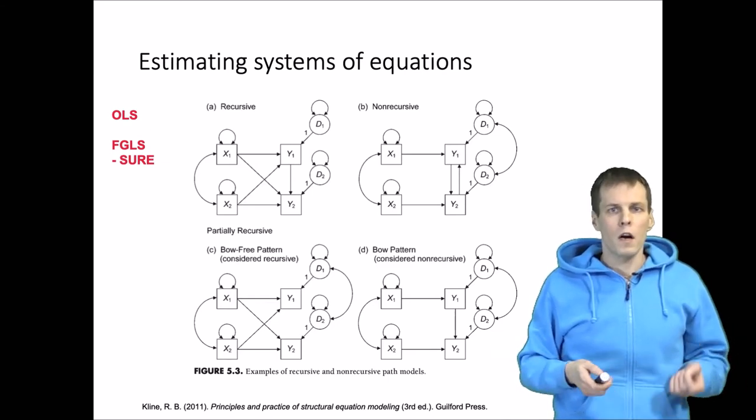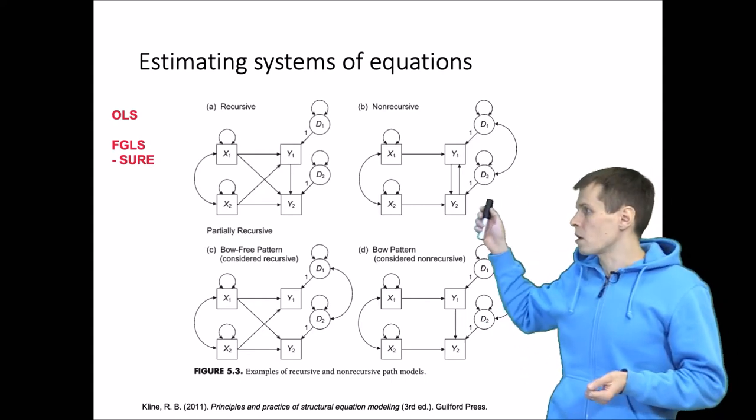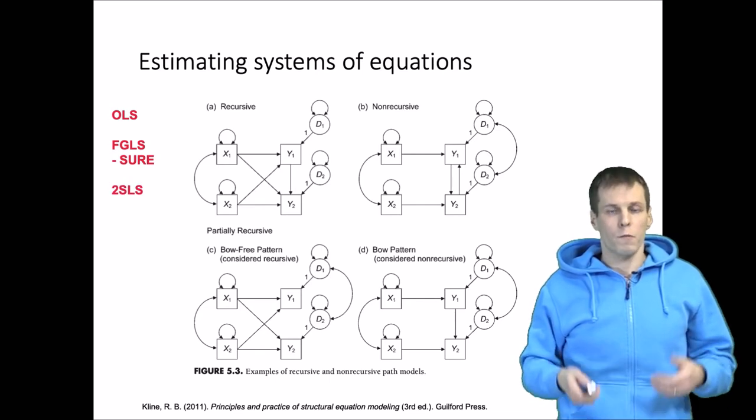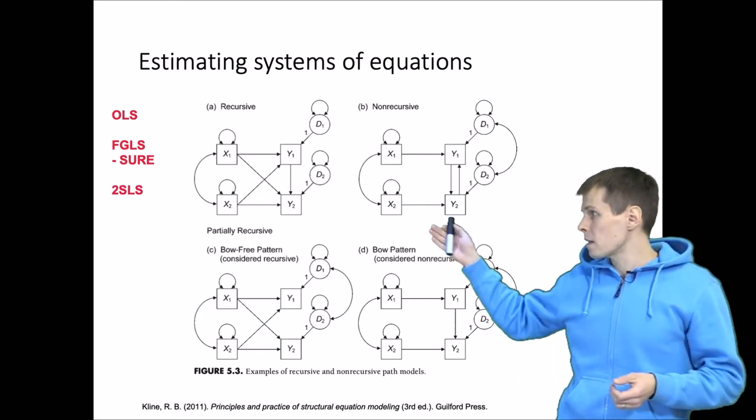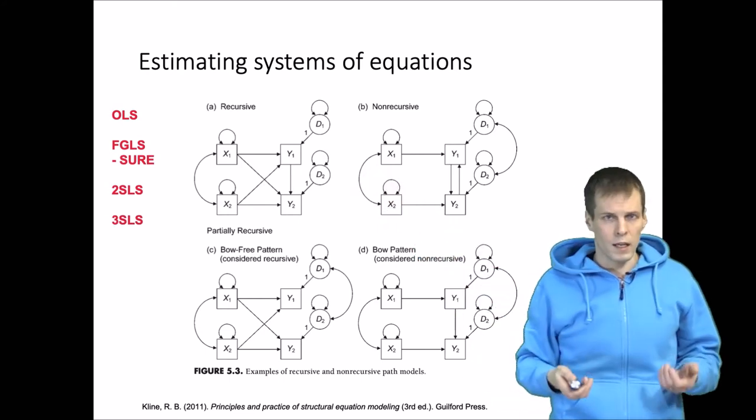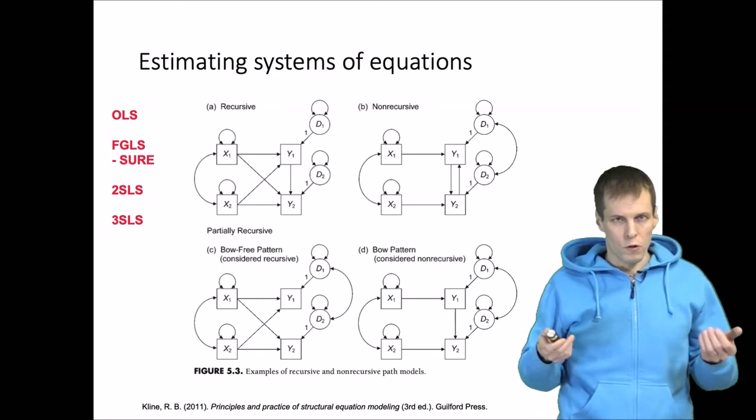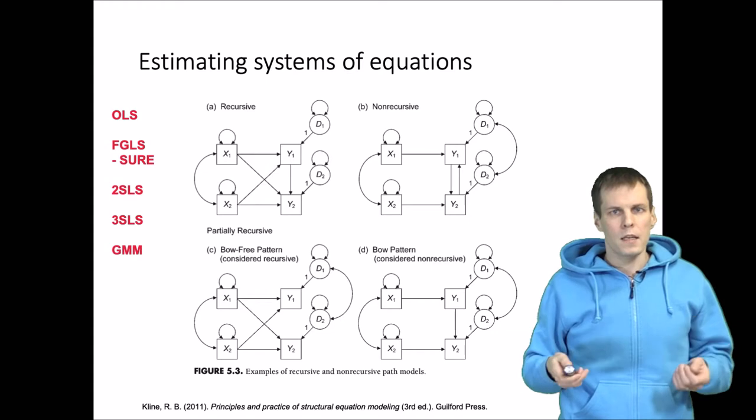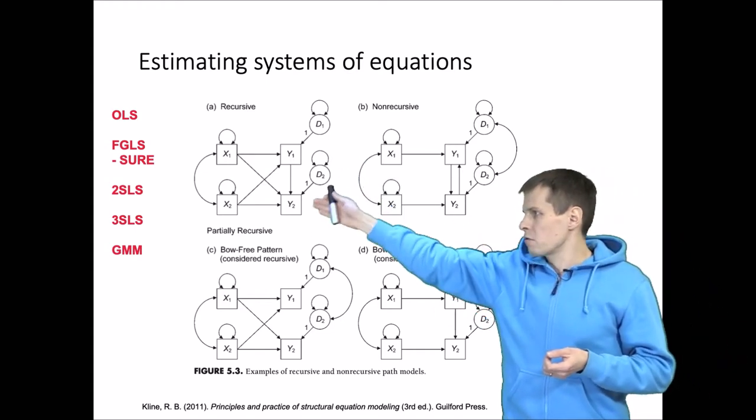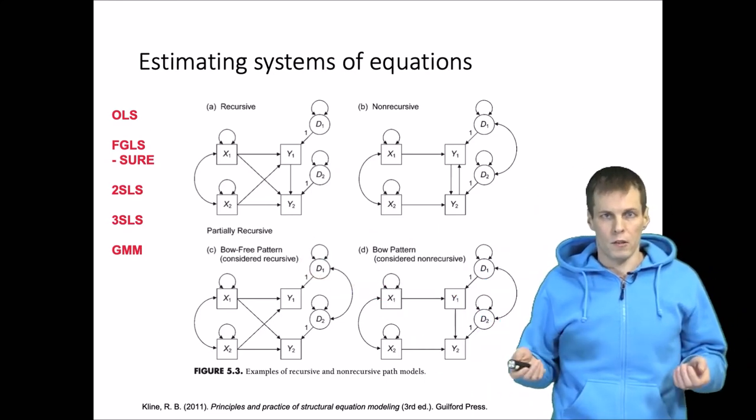Then we have different kinds of instrumental variable techniques that can be used for estimating all these models. The simplest estimation technique is two stage least squares, and then we have three stage least squares, which basically combines two stage least squares with seemingly unrelated regressions. Then we have generalized method of moments, which basically generalizes all these estimation techniques into a more general framework and is more efficient than the alternatives.